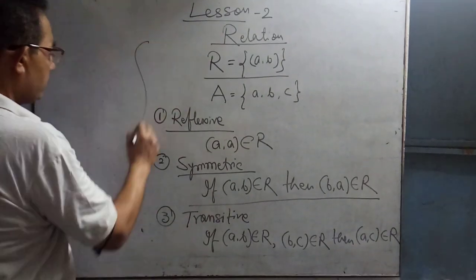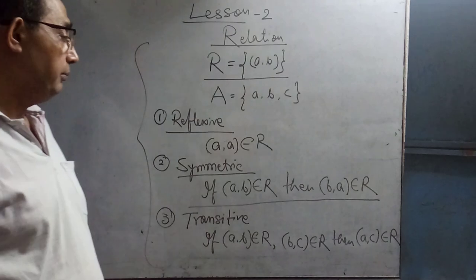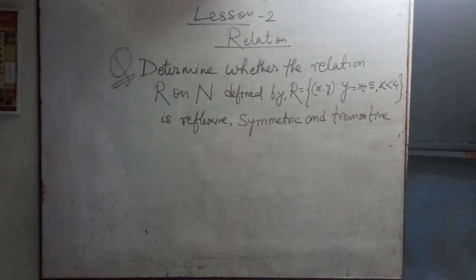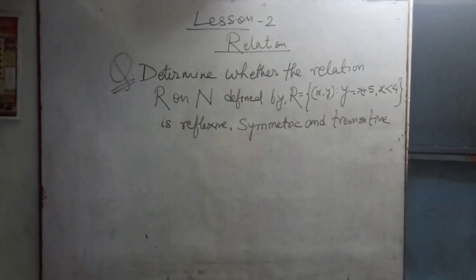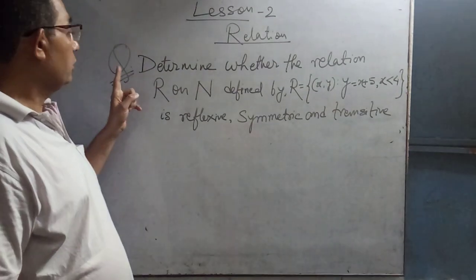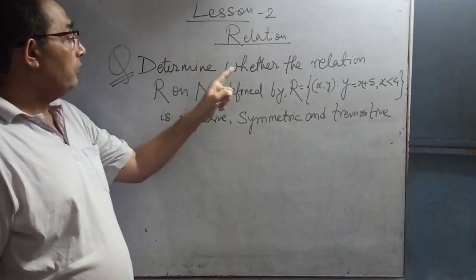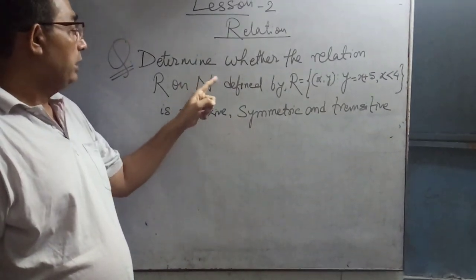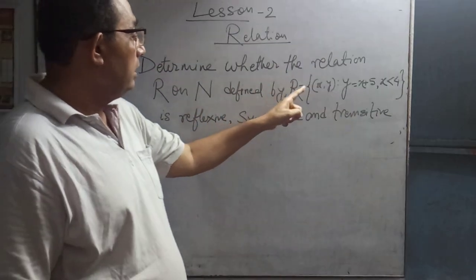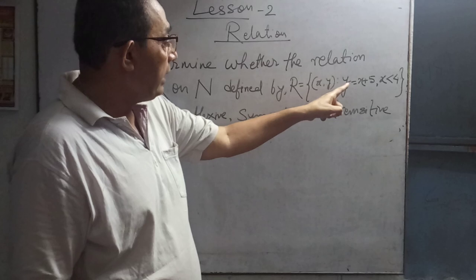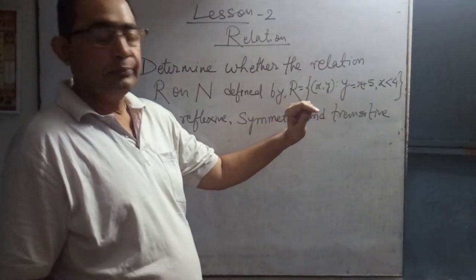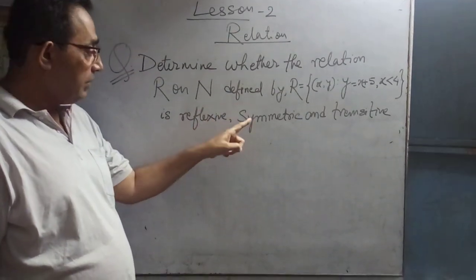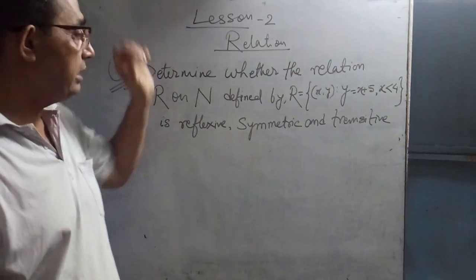Now, all the relations we will clarify by solving some problems. The question is: determine whether the relation R on N (N is natural numbers), defined by R = {(x, y) : y = x + 5}, where x < 4, is reflexive, symmetric, and transitive.